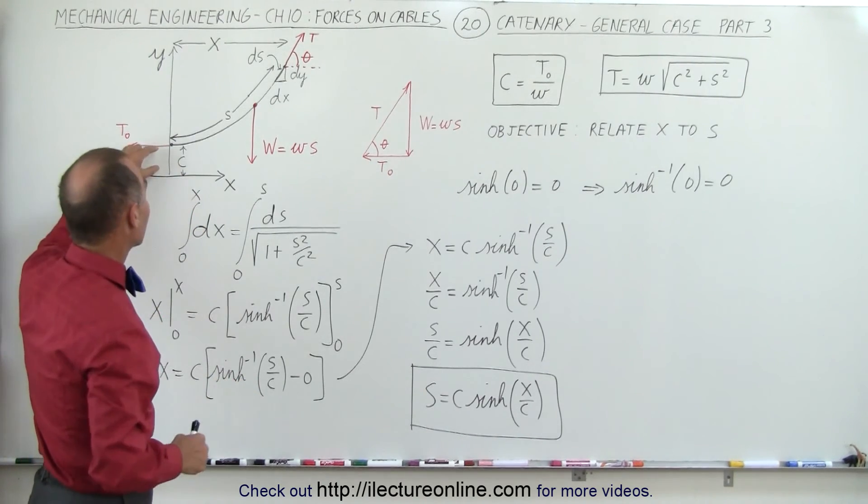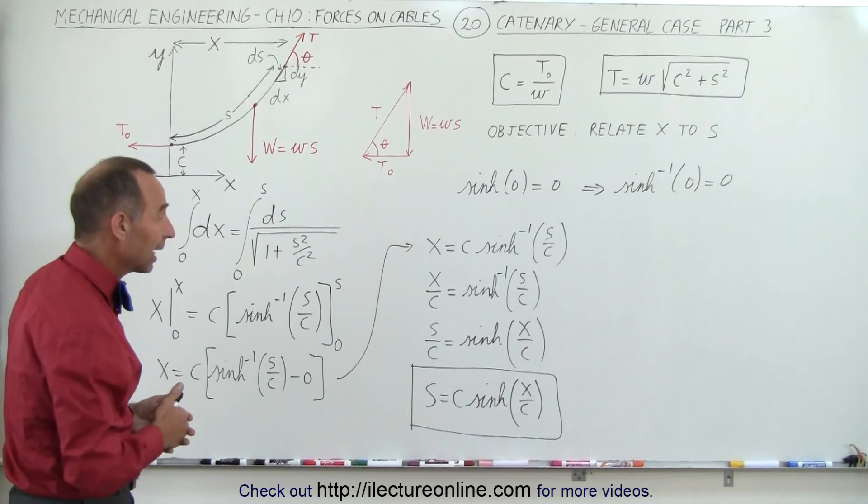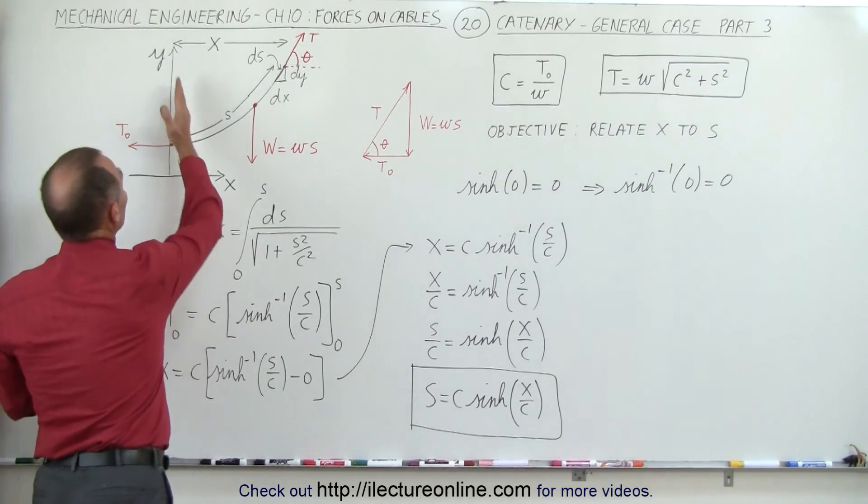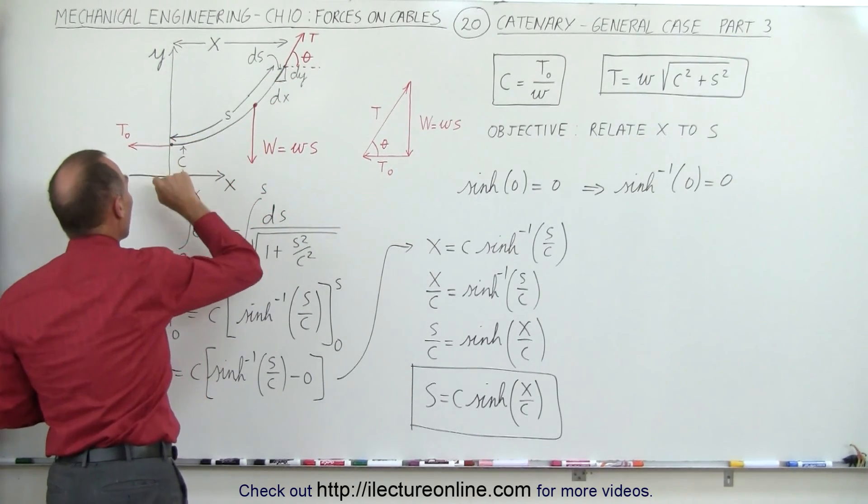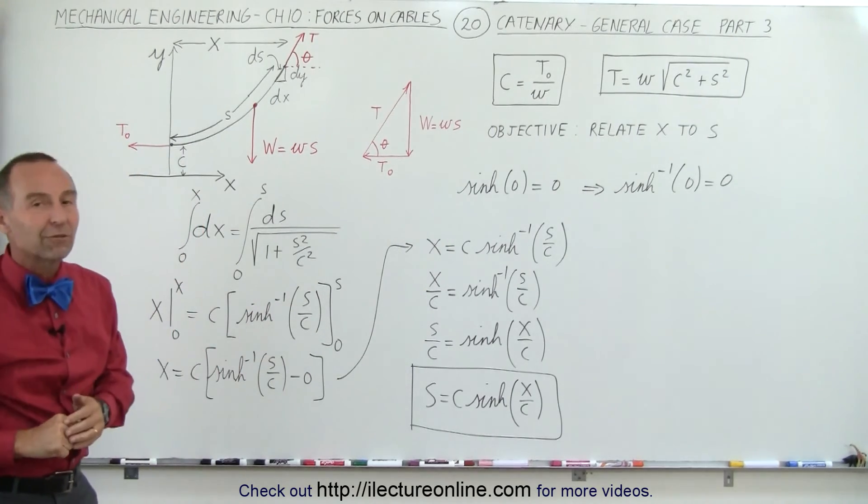And even though we think of this as a constant it will change in value depending upon the other parameters on the cable. And so here's some relationship that relates the distance, the horizontal distance, to the length of the cable, to the distance between the origin and the lowest point on the cable. And that's the equation we need for that.